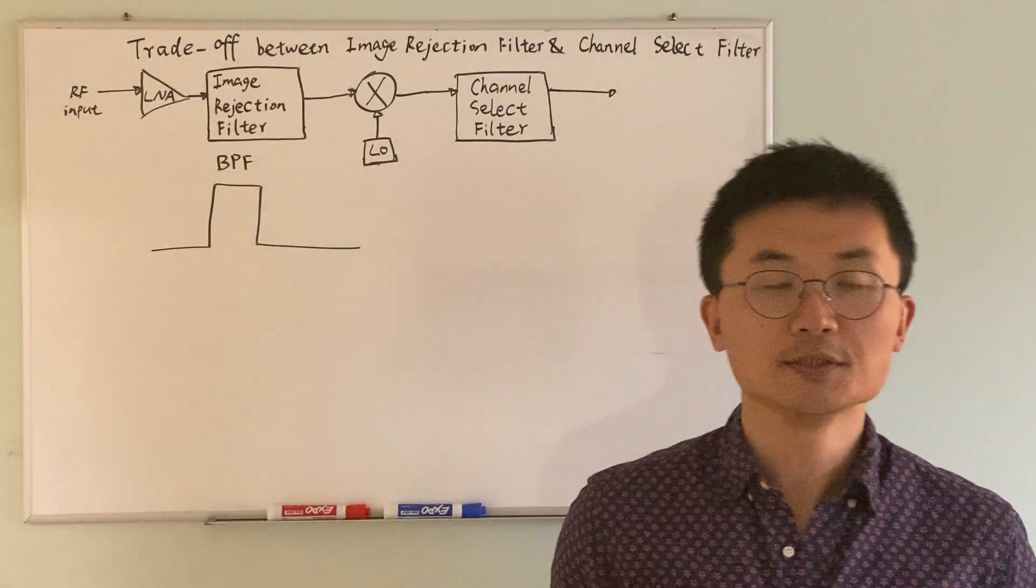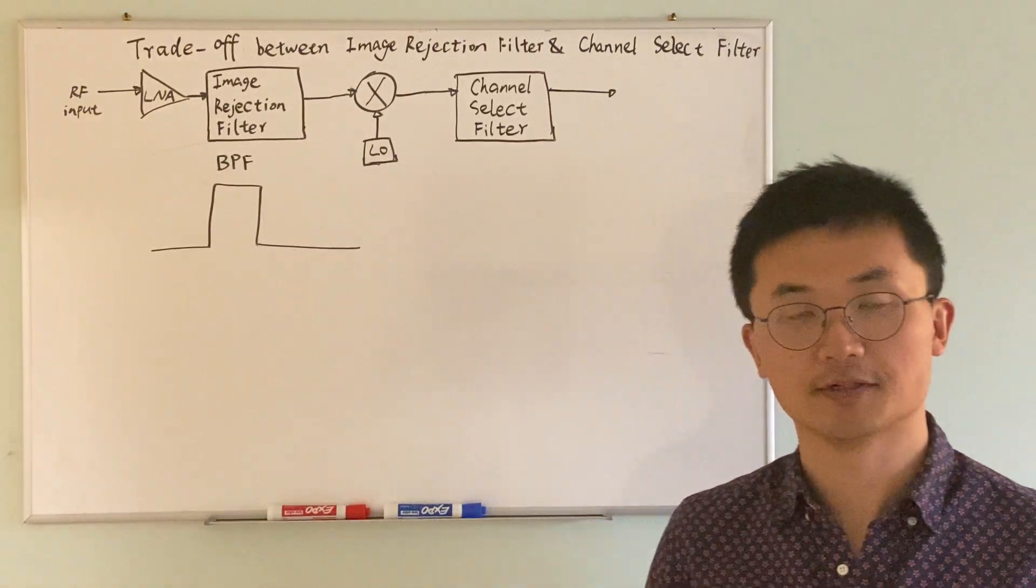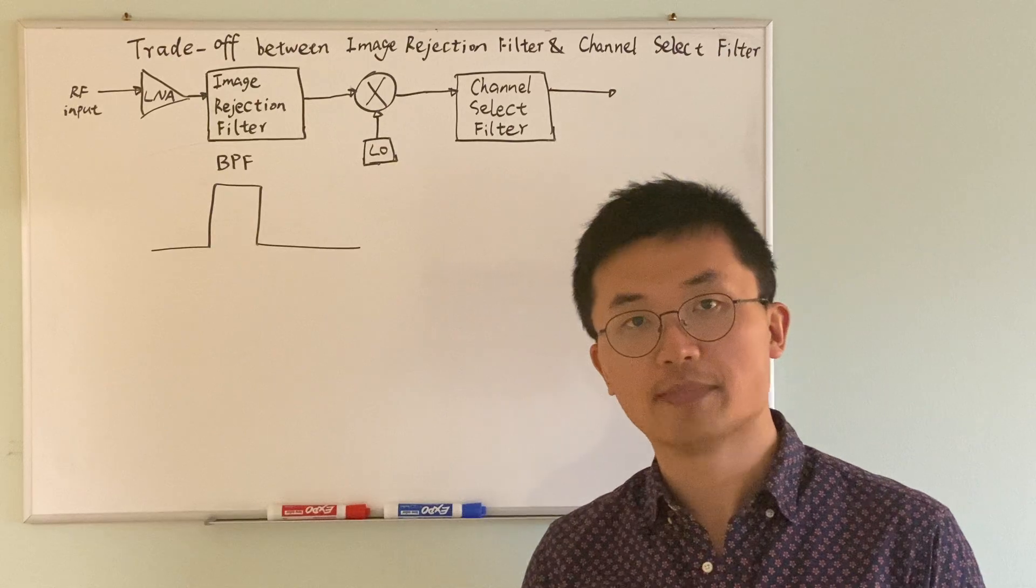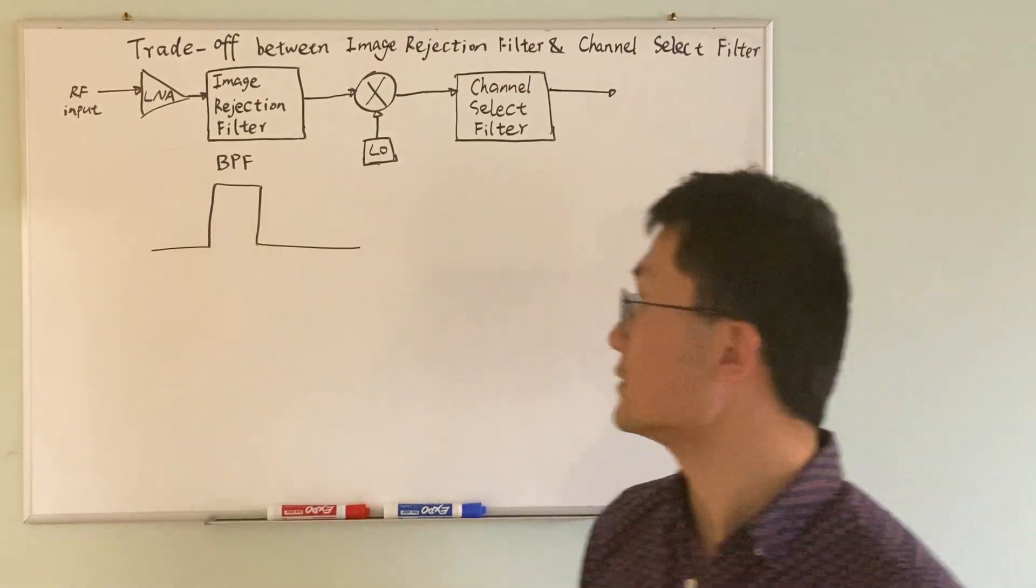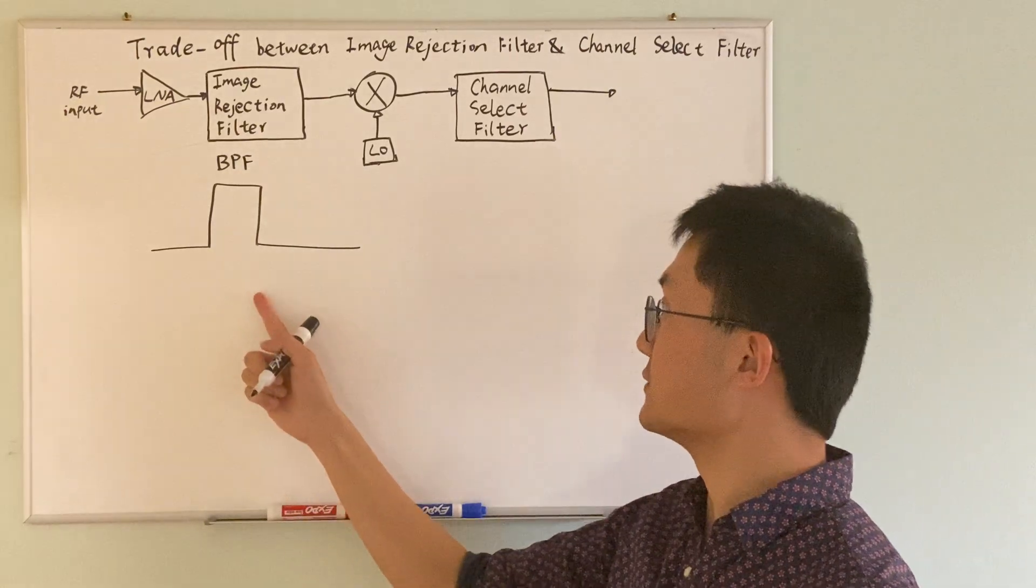So in order to understand this pair of trade-offs, there is a concept we need to understand first. It is the fractional bandwidth in a bandpass filter. So let's say this is the frequency response of a bandpass filter.